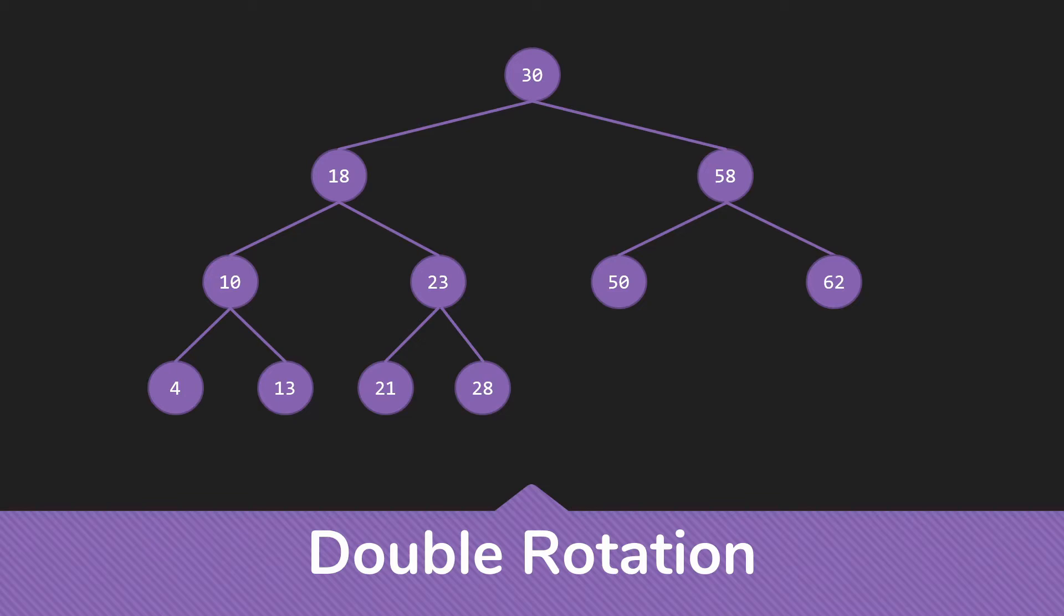If, however, our imbalance comes from two different directions, so the child is a left child and then the grandchild is a right child of that left child, then we need the double rotation.